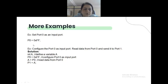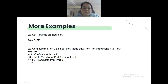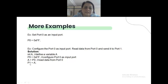A simple program: port 0 is set as input port, you read data from port 0, and send it to port 1. To program this, take a variable A as a temporary variable. Set P0 = 0xFF to enable all pins, read input from P0, assign to A, then assign A to P1. This transfers data from P0 to P1 — you are sending data from port 0 to port 1.